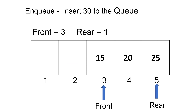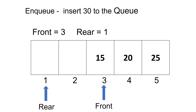Let's apply an enqueue operation on the previous queue to add 30. Rear was pointing to the last index, but there are vacant places in this queue as the total number of elements is less than the max size of the array. So we point rear back to index 1 and insert 30 there.